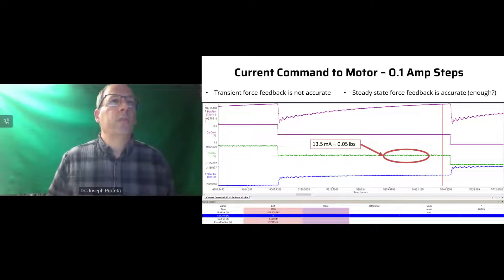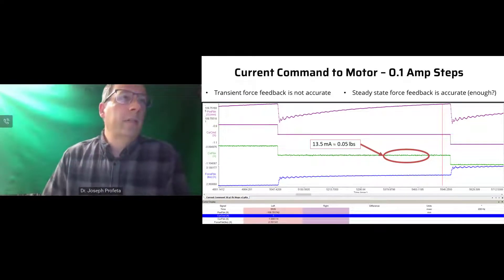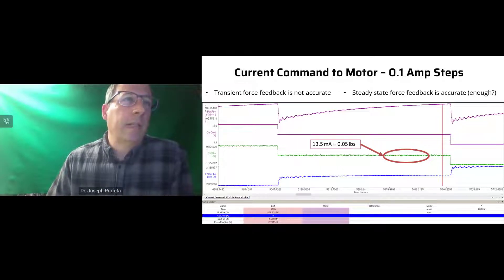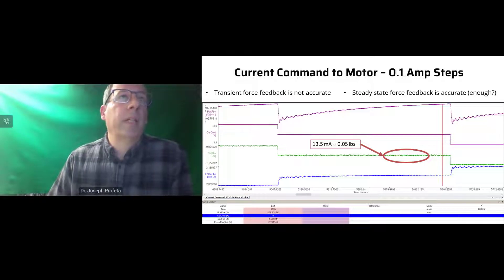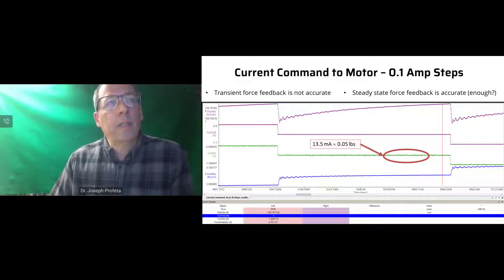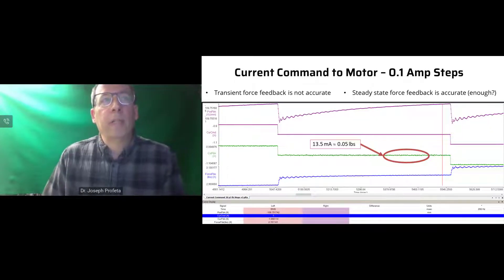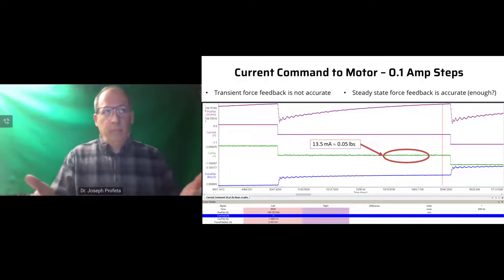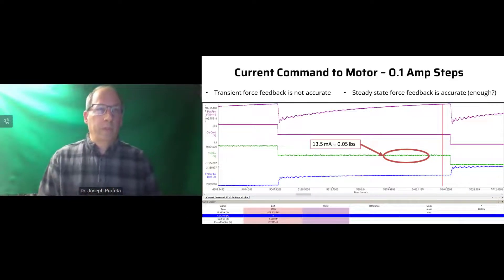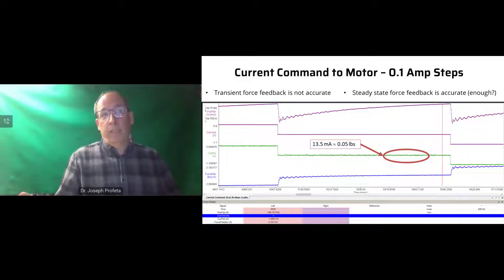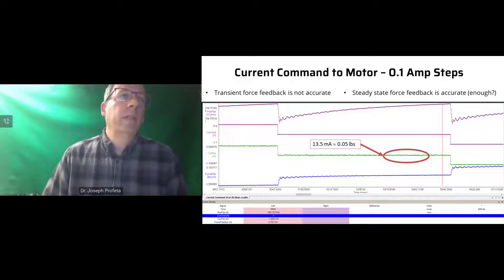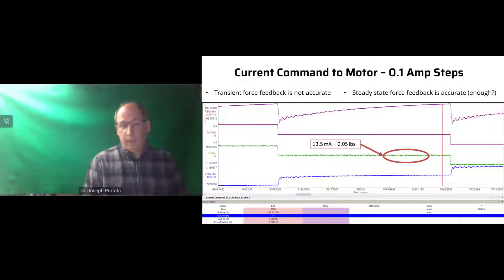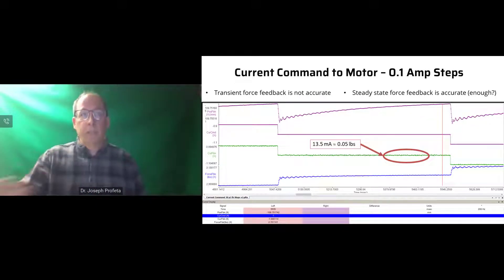Zooming in, even at about one pound of force, there is current ripple of about 0.05 pounds. If you're trying to measure down to 0.01 pounds, this won't work. But if you're measuring half a pound and are willing to wait for transients to die out, open-loop might be acceptable, saving the cost of a sensor.